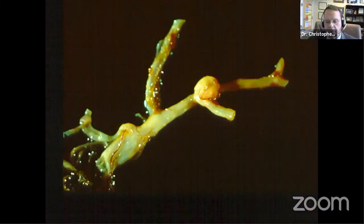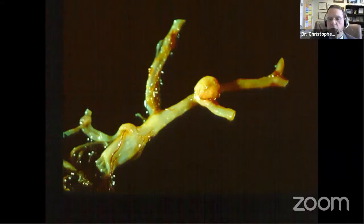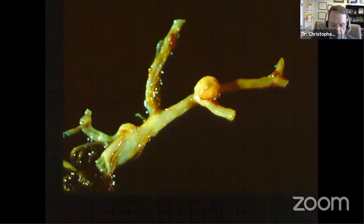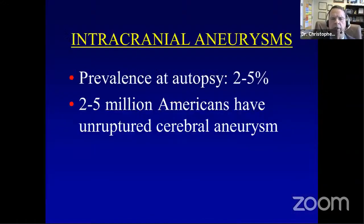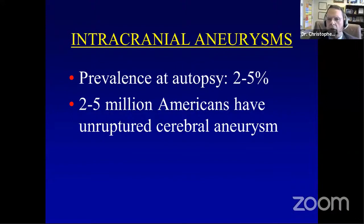This is the conundrum. I found this aneurysm at autopsy in an 86-year-old who died in a nursing home of pneumonia — a 5-millimeter middle cerebral artery aneurysm. She likely had it most of her adult life, never knew it, and died of something else. With advanced imaging techniques we're finding many of these during life. The prevalence at autopsy runs about 2% to 5%, meaning an estimated 2 to 5 million Americans have unruptured cerebral aneurysms.